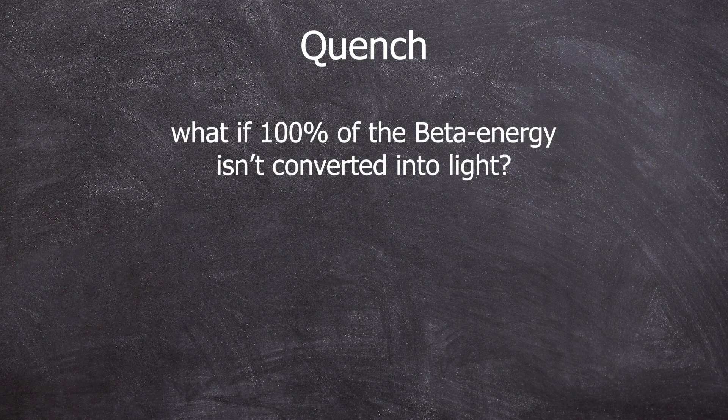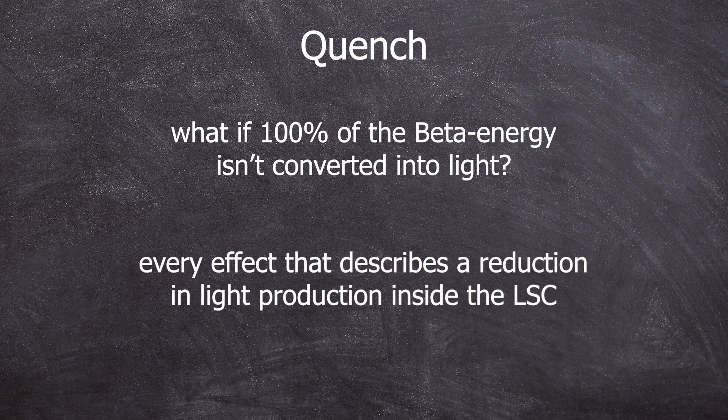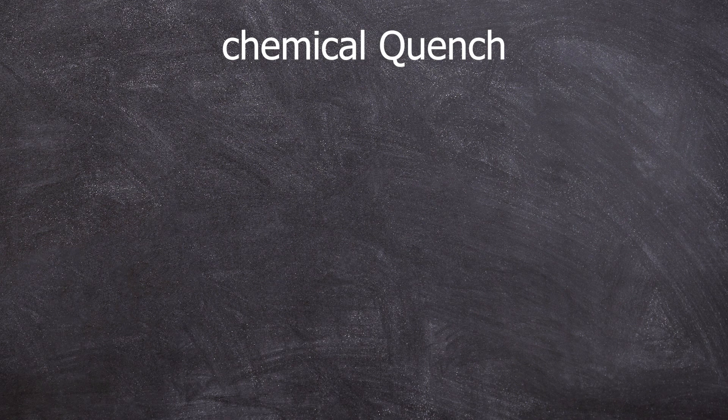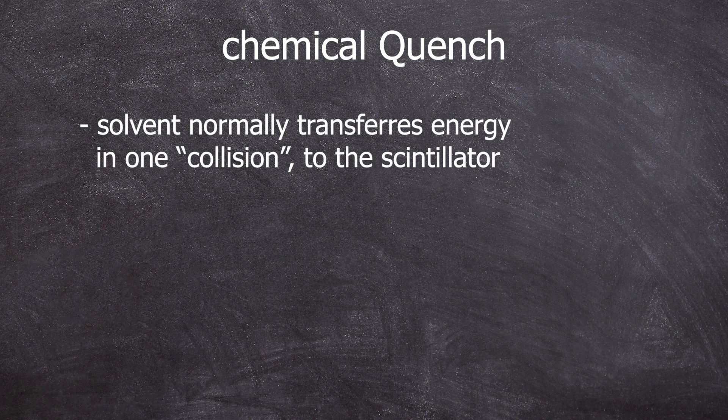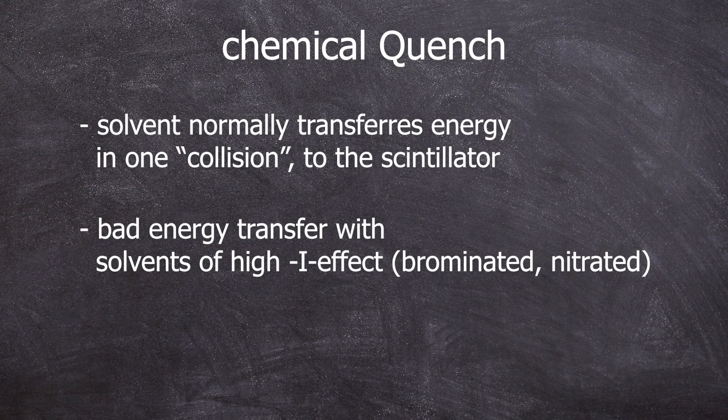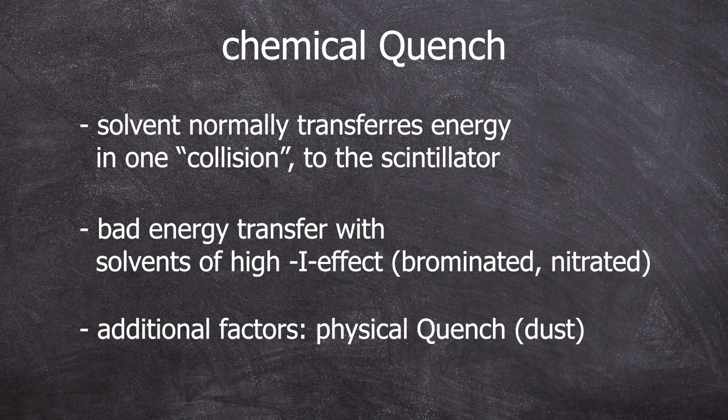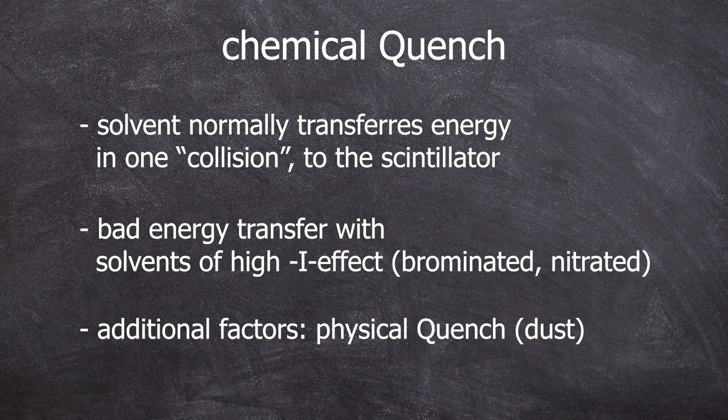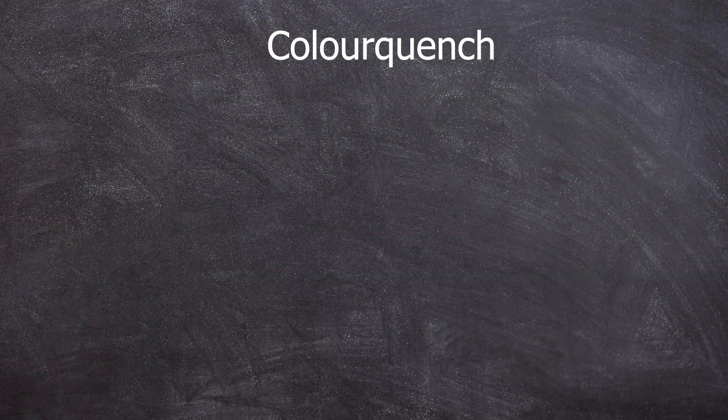Further information you should know. If not 100% of the energy from the decay is indirectly converted into light, we talk about a quench, an effect that leads to a reduction in the light in the LSC. There are different types. The chemical quench, where the solvent does not transfer the energy to the scintillator. Solvents with a high minus I effect, such as brominated or nitrated solvents, do this. There is also a physical quench. If there is dust in your sample, the energy transferred to the scintillator can be disturbed or the light emitted can also be absorbed by dust particles before reaching the detector or the beta particle directly can hit the dust particle.